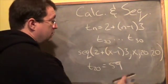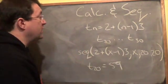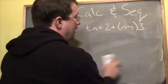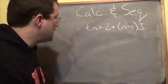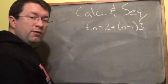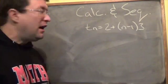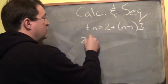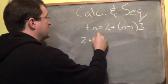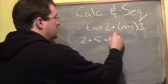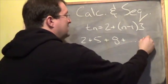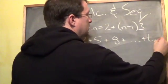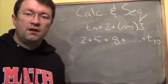Now the calculator can also be used to do a summation. Let's go back to our sequence: 2, 5, 8, dot dot dot — and let's say I want to add this up to the 30th term.